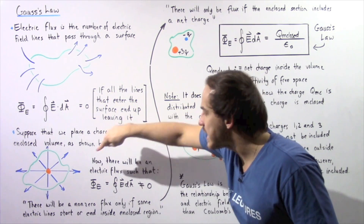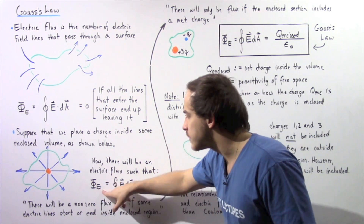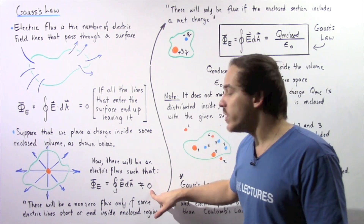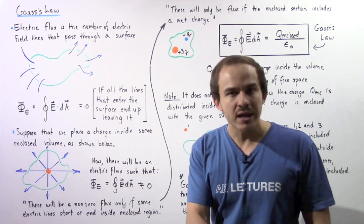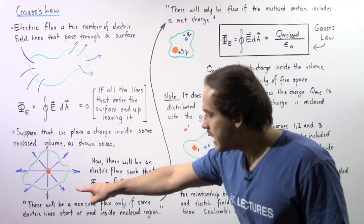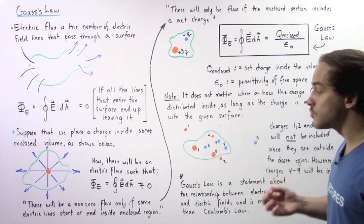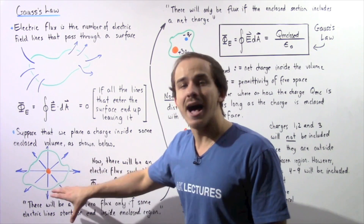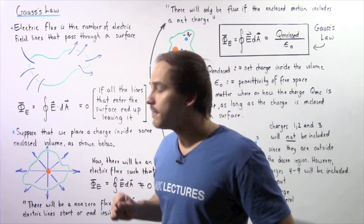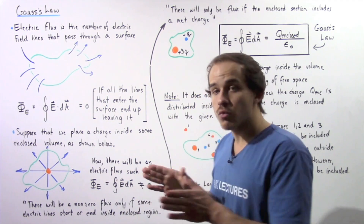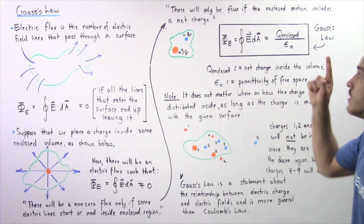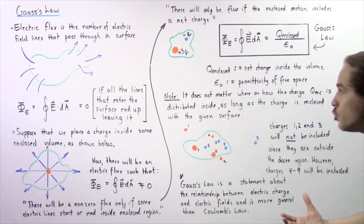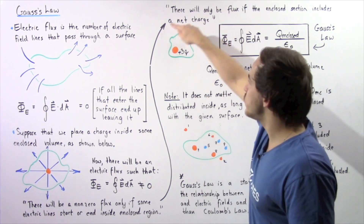So now there will be a non-zero electric flux. This integral will be non-zero, and that leads to the following statement: there will be a non-zero electric flux only if some electric field lines start or end inside our enclosed region. There will only be an electric flux if the enclosed section includes a net charge.